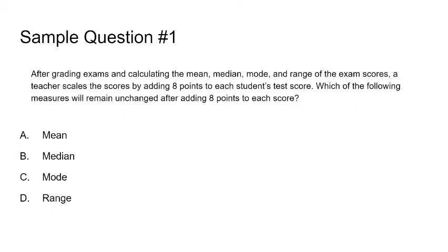Mean is going to be the average, so obviously if we increase the average, it's going to change. Median is the number directly in the middle. Mode is going to be the number that appears the most. So if we change any of those by eight points, we're definitely going to see a change in those measurements.